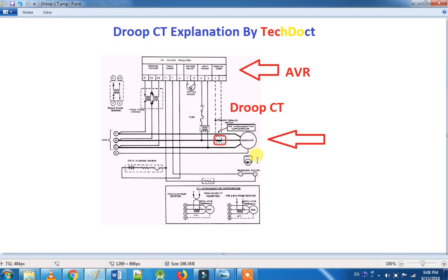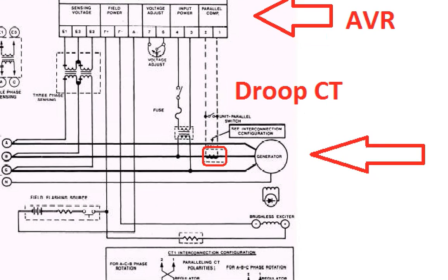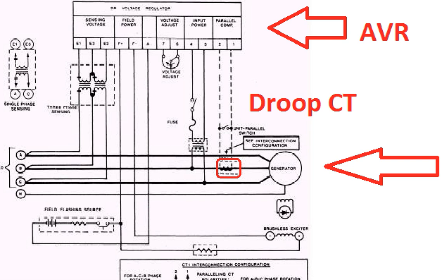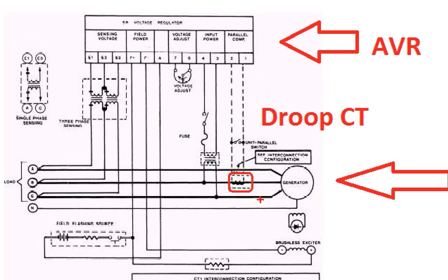We are talking about Droop CT. It is normal to be a type of Droop CT. You can use this function. If we are in the AVR, we will talk about the load.